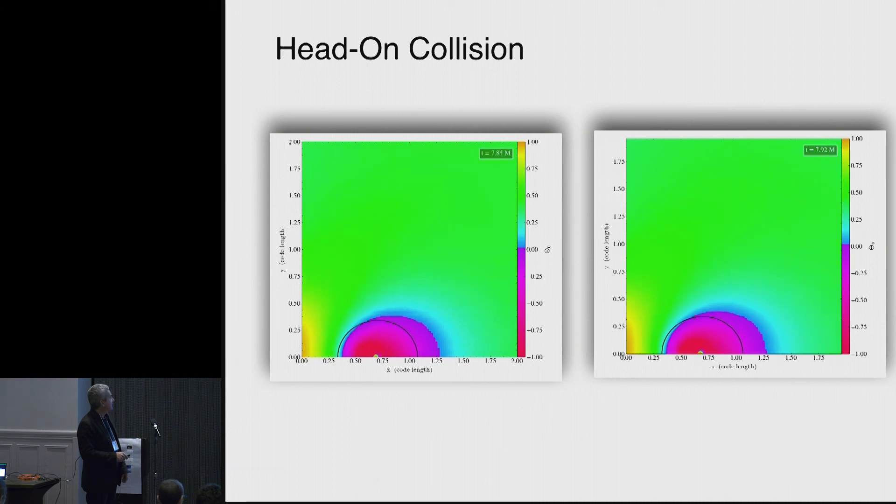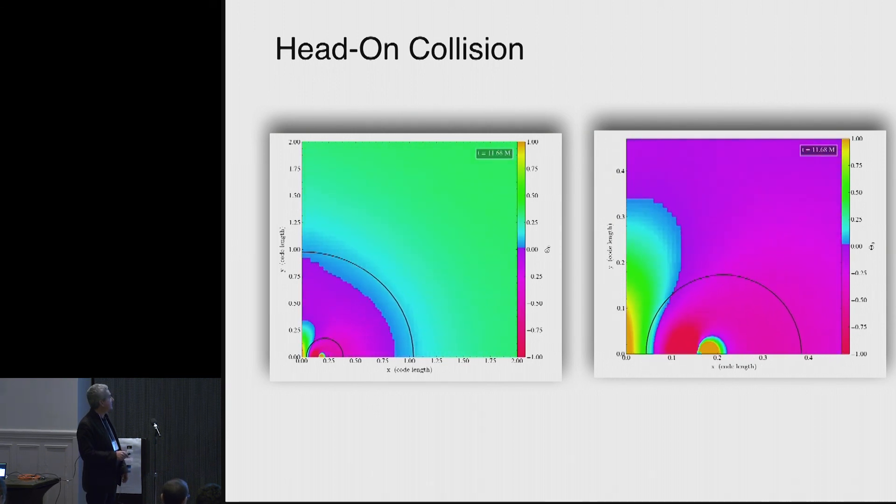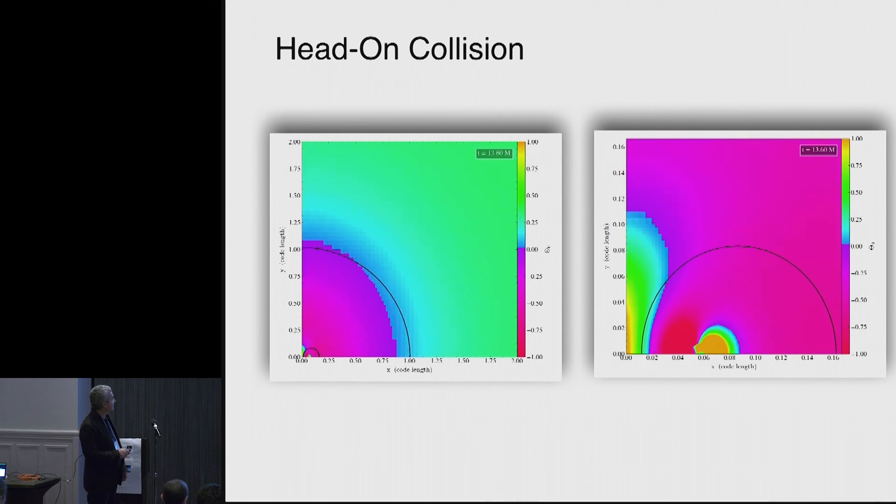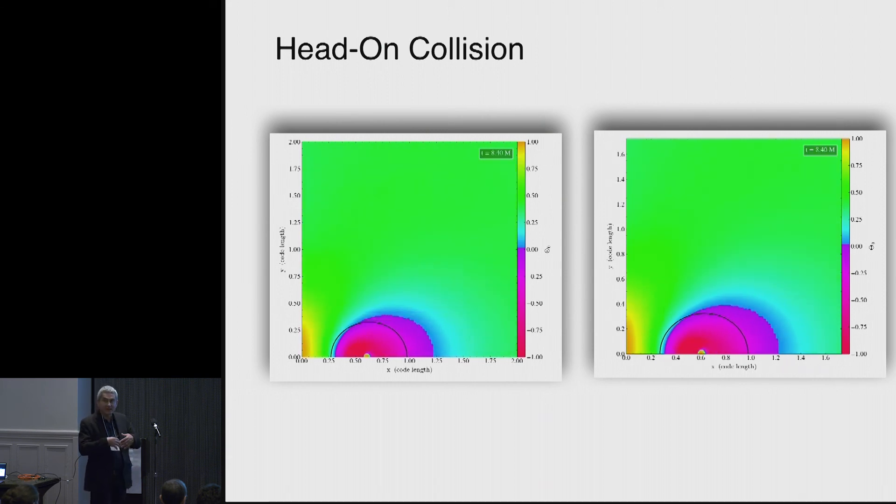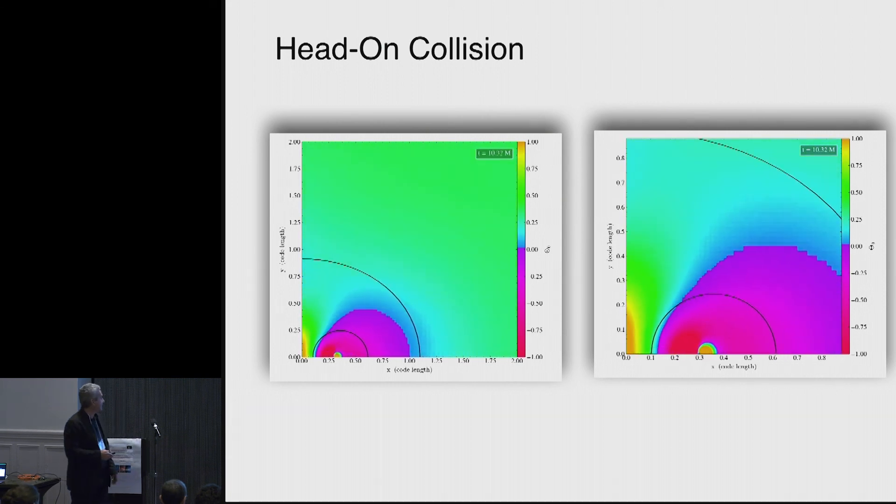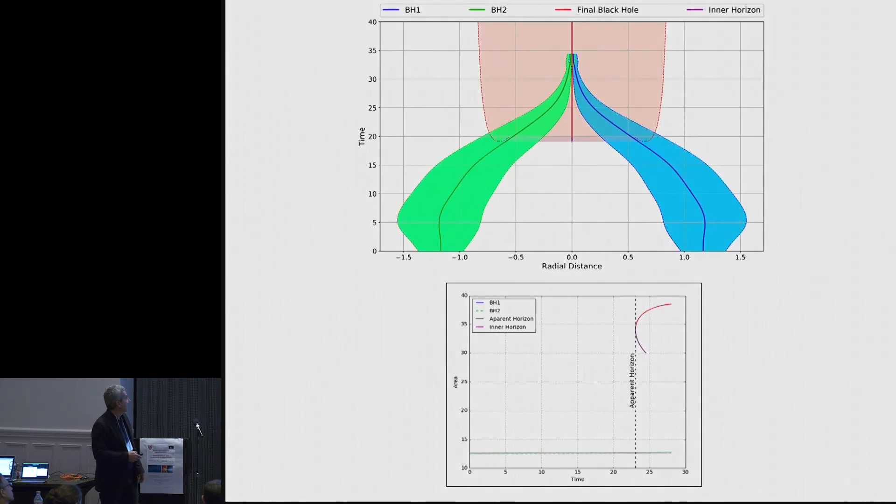And what I have here is just a movie of the head-on collision occurs in this direction. This is one of the black holes. The purple is negative. The green is positive. So you can see that the region, this is the outermost apparent horizon. So the region between this is one of the black holes, and the common apparent horizon appears. Here you will see that it starts being converted into a negative expansion region.